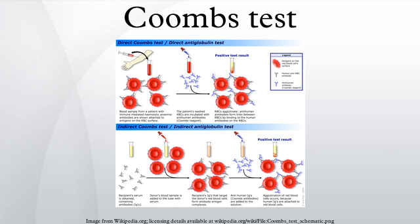The indirect Coombs test is used to screen for antibodies in the preparation of blood for blood transfusion. The donor's and recipient's blood must be ABO and RHD compatible. Donor blood for transfusion is also screened for infections in separate processes. A blood sample from the recipient and a blood sample from every unit of donor blood are screened for antibodies with the indirect Coombs test. Each sample is incubated against a wide range of RBCs that together exhibit a full range of surface antigens. The indirect Coombs test is also used to test a sample of the recipient's serum against a sample of the donor's RBCs — sometimes called cross-matching blood.